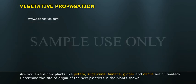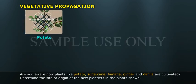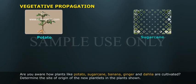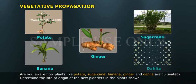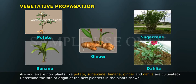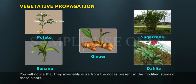Are you aware how plants like potato, sugarcane, banana, ginger, and dahlia are cultivated? Determine the site of origin of the new plantlets in the plants shown. You will notice that they invariably arise from the nodes present in the modified stems of these plants.